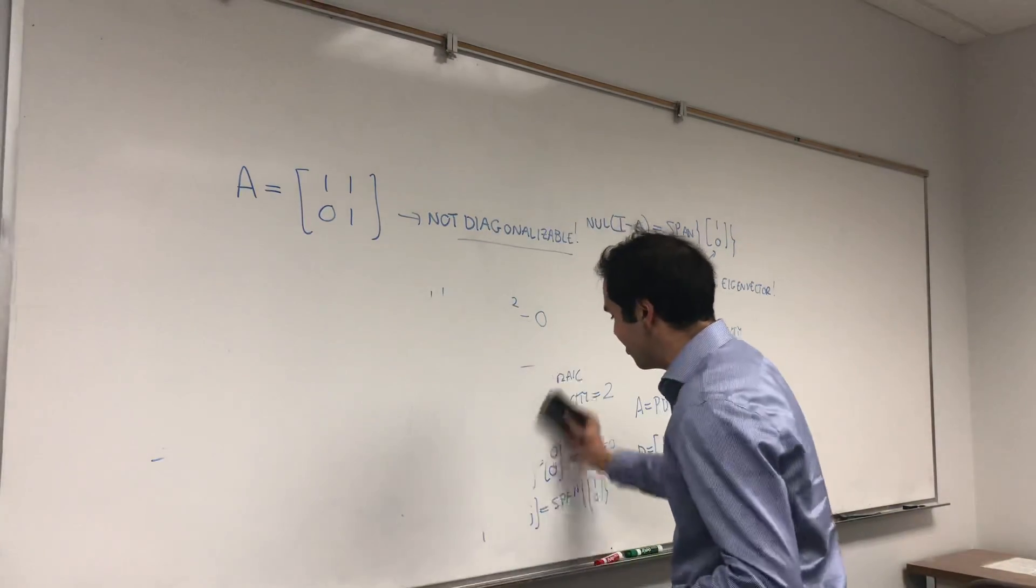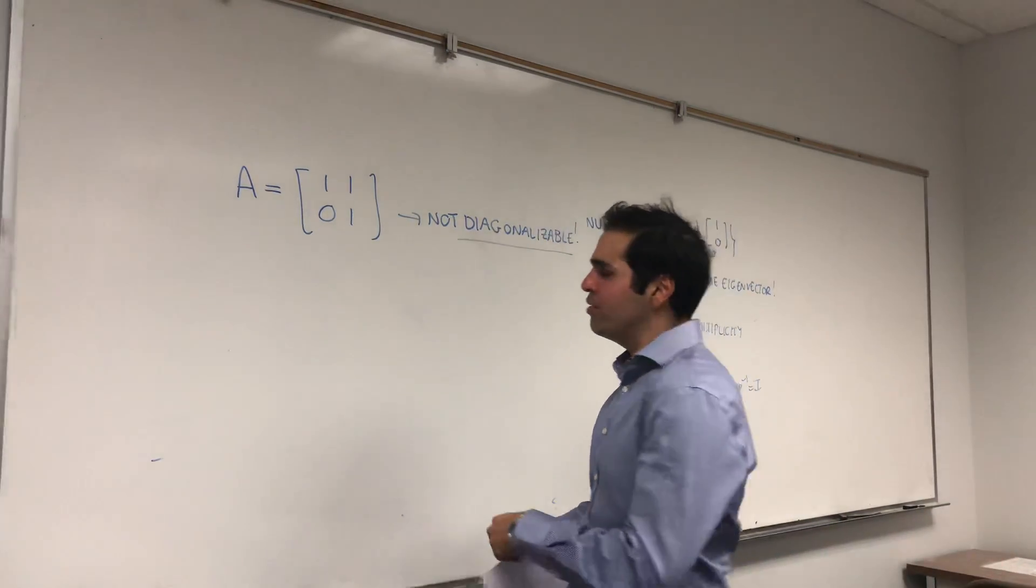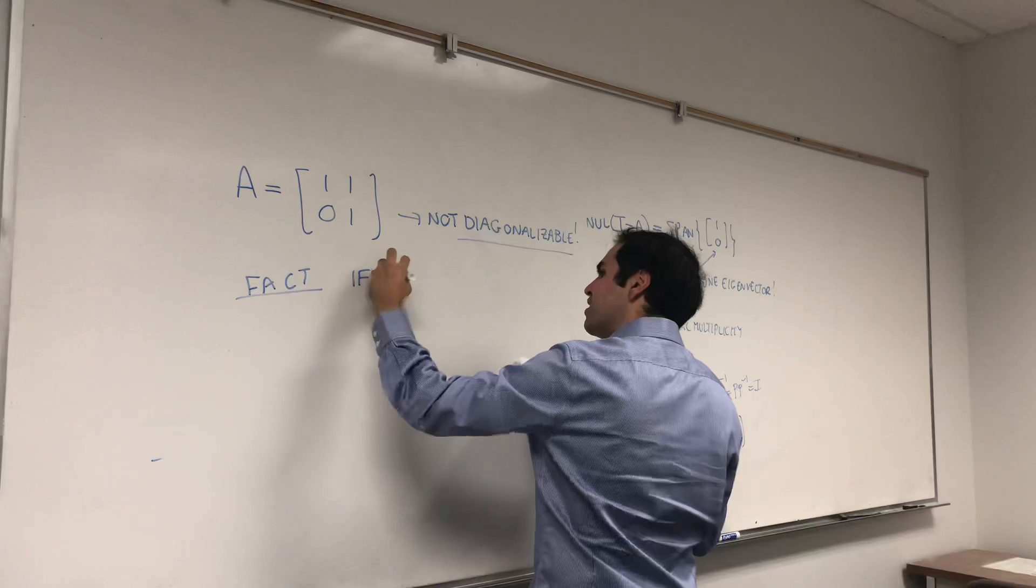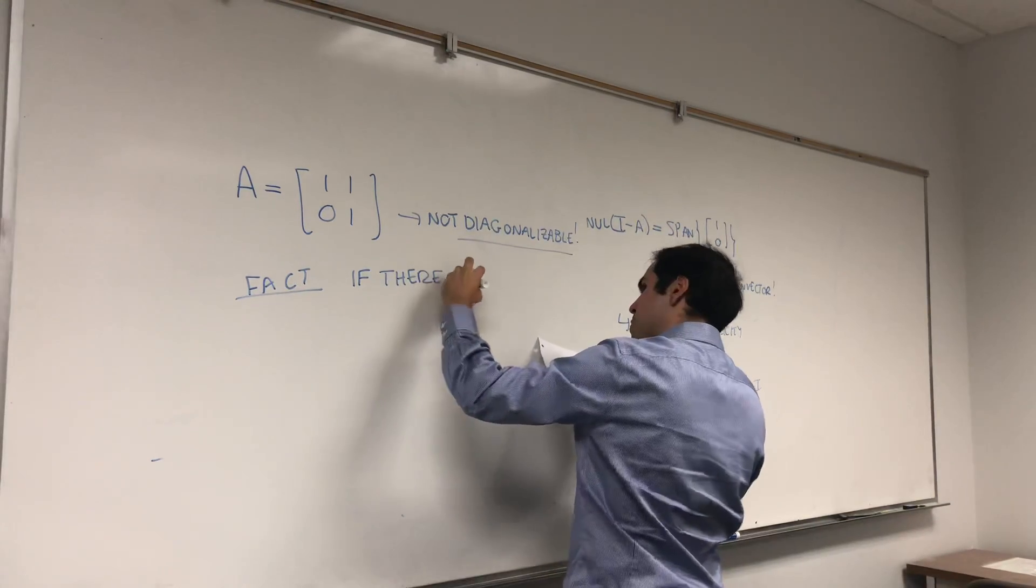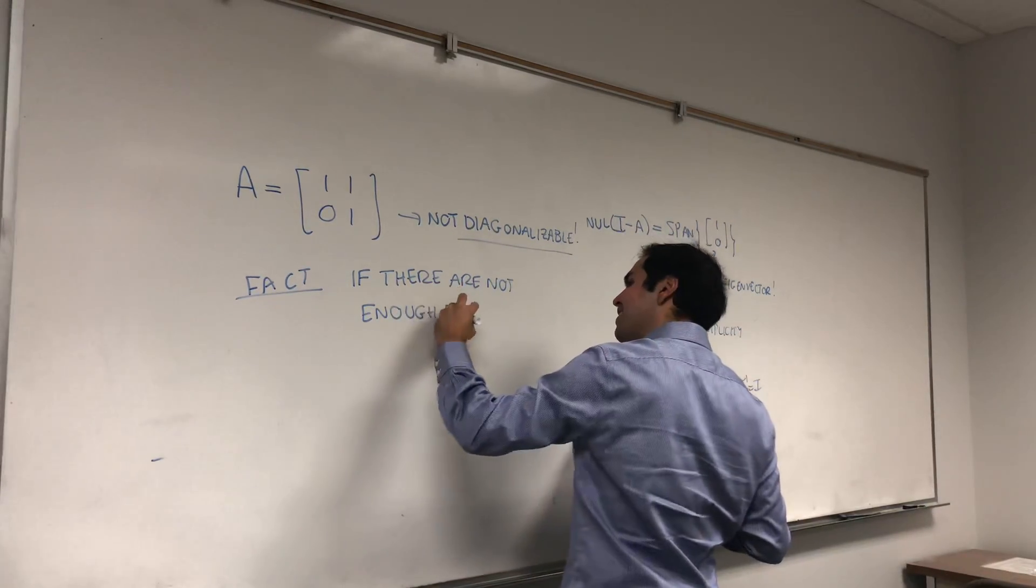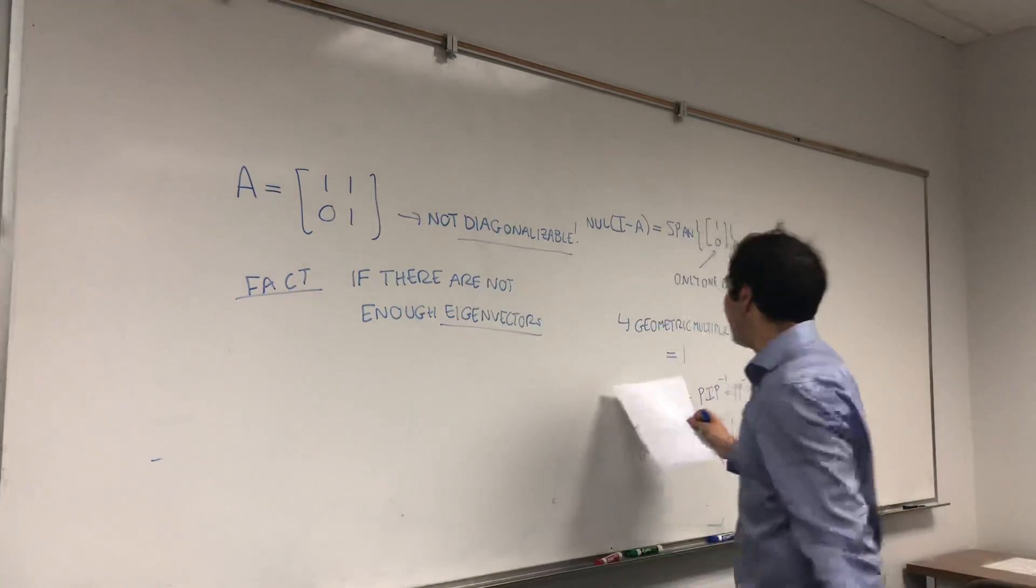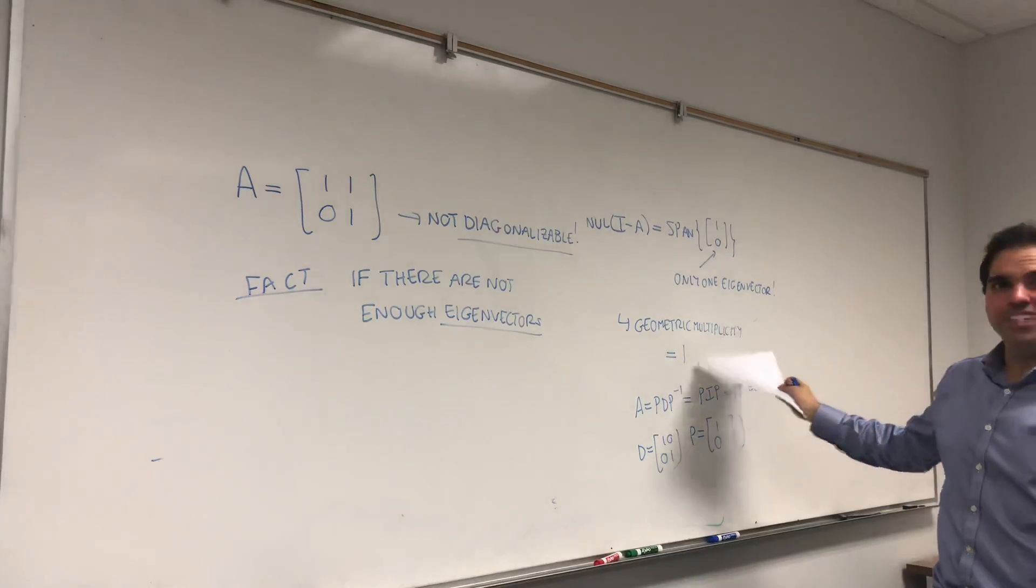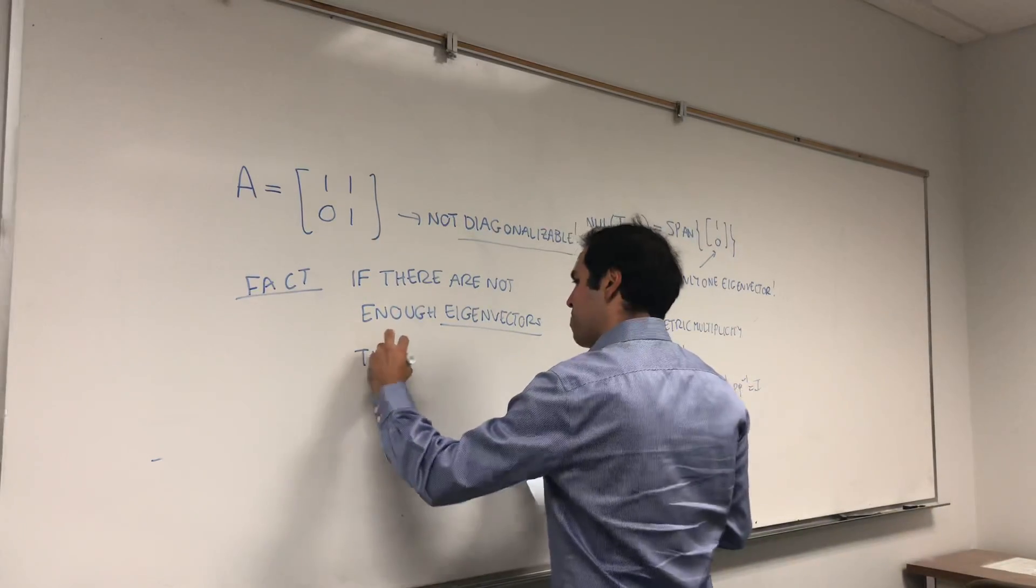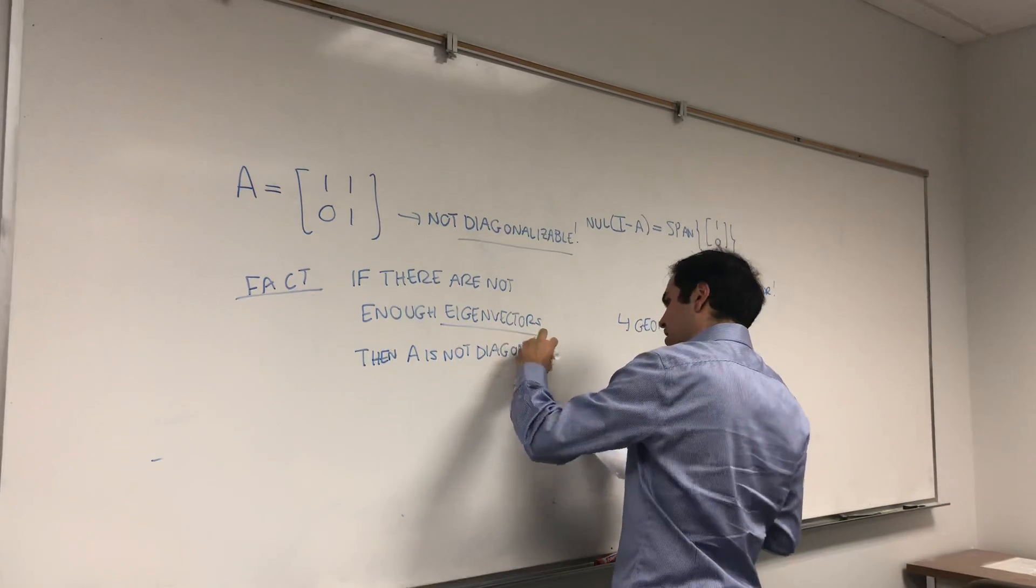So maybe to summarize, I know lots of books have spent 20 pages on that, but here's the thing. When is the matrix not diagonalizable? Fact: if there are not enough eigenvectors, enough eigenvectors, just like here. In other words, if the geometric multiplicity is not equal to the algebraic multiplicity, then A is not diagonalizable.